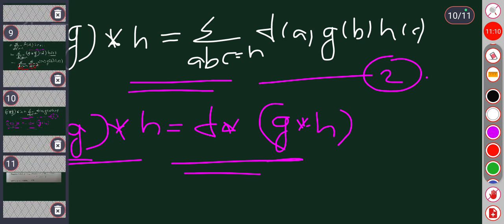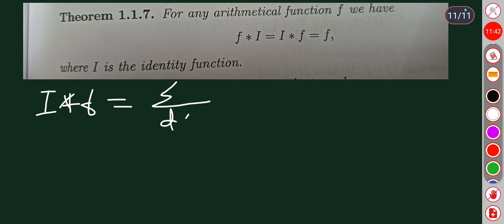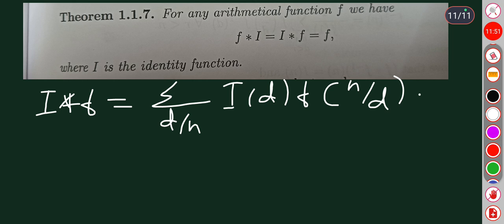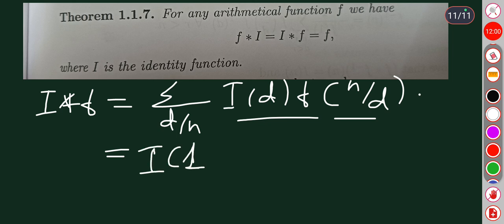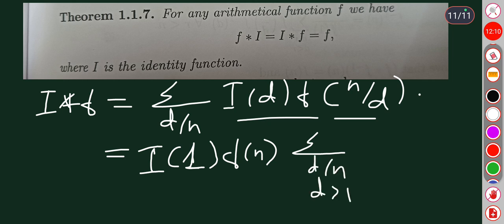Next theorem: for any arithmetical function f, f star I equals I star f equals f, where I is the identity function. Proof: I star f of n, by definition, equals summation over d divides n of I of d times f of n by d. Taking the term where d equals 1, this gives I of 1 times f of n.